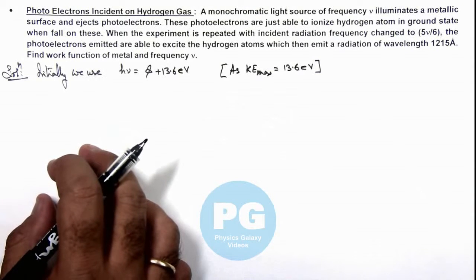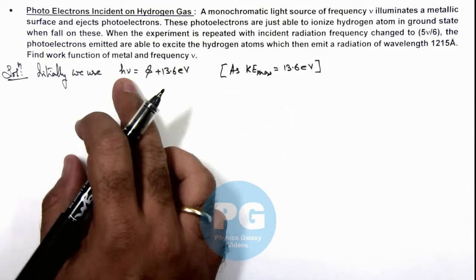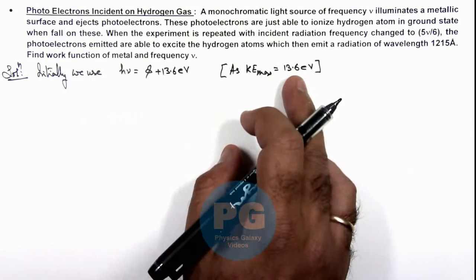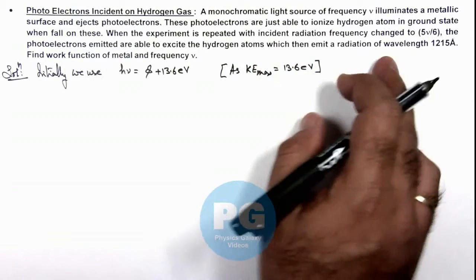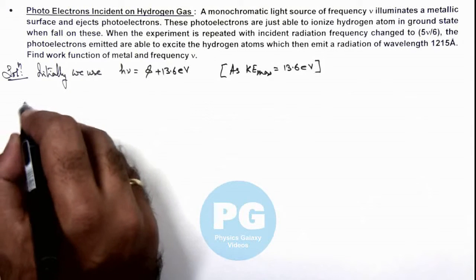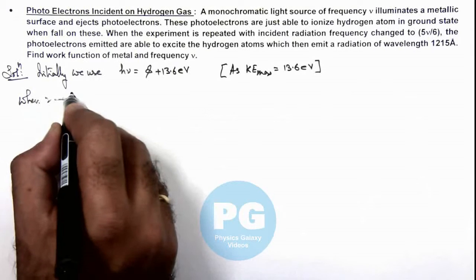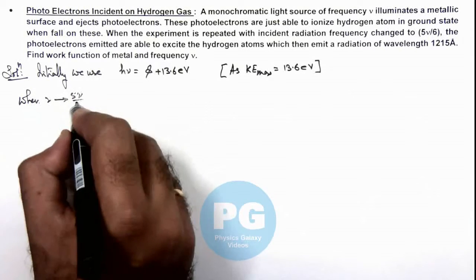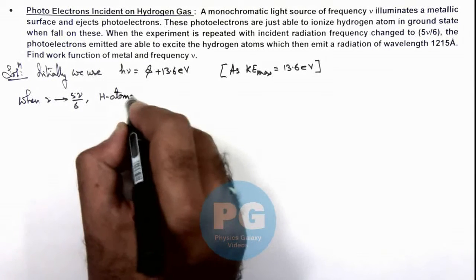And later we can say, when the frequency is increased, the electrons are able to excite the hydrogen atoms due to which these atoms will emit the radiation of wavelength 1215 angstrom. So here we can write when ν is changed to φν/6, the H atom emits